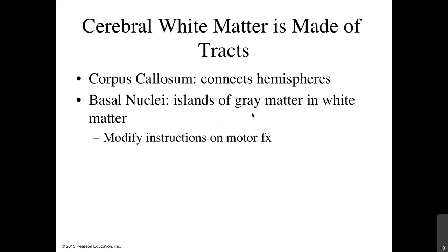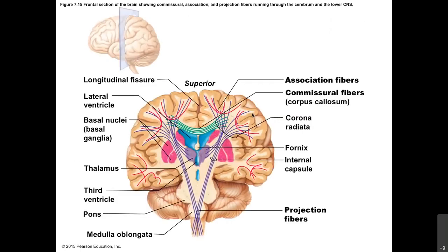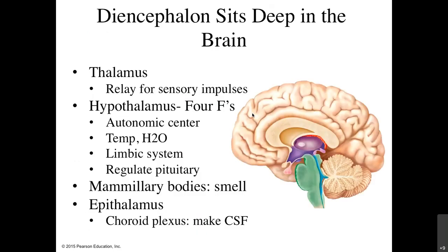The basal nuclei are those islands of gray matter in the white matter and help modify motor function instructions, giving us finer motor control. The thalamus is our relay station for sensory impulses — sensory input comes up from the spinal cord, and the thalamus directs vision to the occipital lobe, hearing to the temporal lobe, touch to the parietal lobe, and so on.